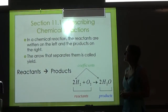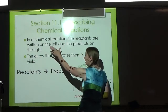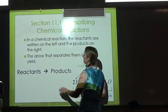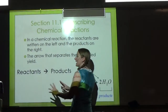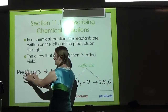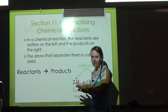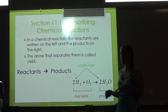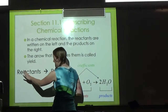In a chemical reaction, the reactants are written on the left of the arrow, and the products are written on the right. The arrow that separates them is the yield sign. You start with reactants, and they react to produce products. So if the question ever refers to the product, you shouldn't ever be looking at the left side of the reaction.